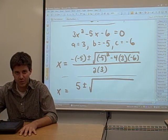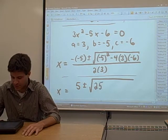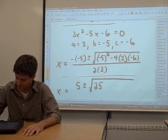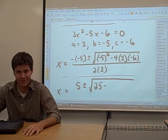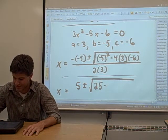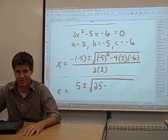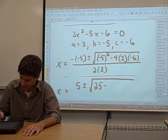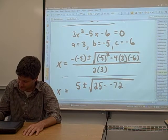Negative 5 squared. Whenever you square a negative number, it becomes positive. In this case, negative 5 squared is 25. We have a negative 4 times 3 is 12, and 12 times negative 6 is negative 72. So this is 25 minus negative 72.